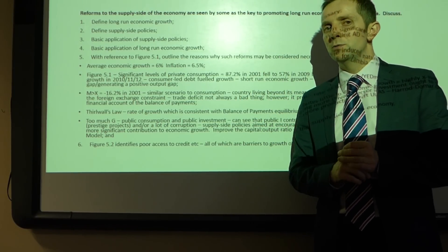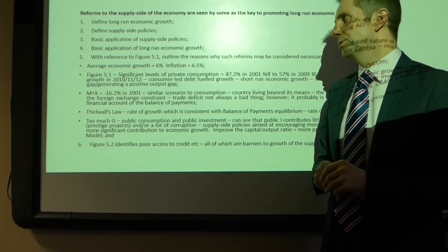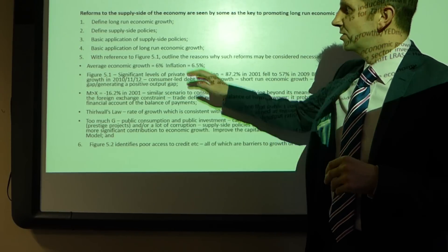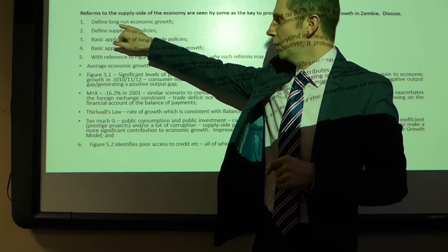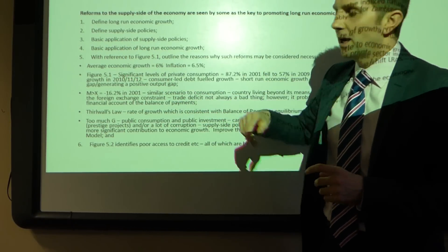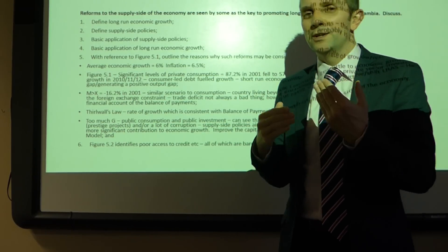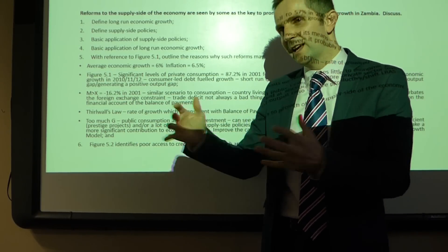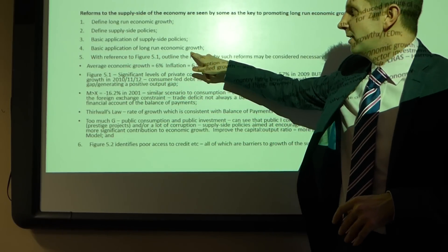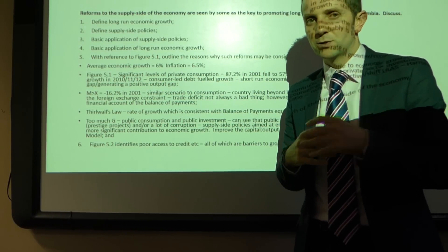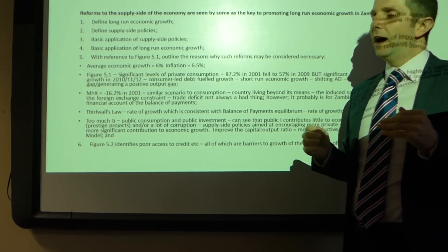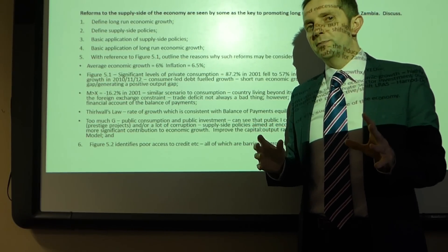How would we go about tackling this one? Start off with a few basics, as has been the formula for all the other questions: define long-run economic growth, define what we mean by supply-side policies, and give a basic explanation of what they're intended to do — improve productive capacity, shift AS right, shift the PPC outwards. Give a basic explanation of long-run economic growth, which is much the same thing, all to do with the AS curve shifting rather than AD.